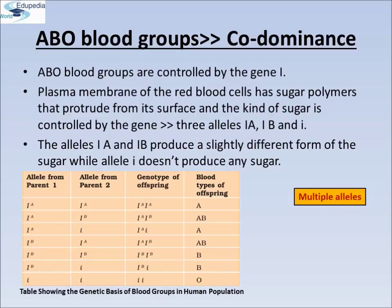Because humans are diploid organisms, each person possesses any two of the three I gene alleles. The capital IA and IB are completely dominant over the small i. In other words, when capital IA and small i are present, only capital IA is expressed because small i does not produce any sugar. And when capital IB and small i are present, the capital IA and capital IB are present together, they both express their own types of sugar. This is because of codominance.